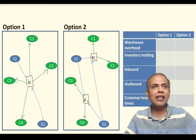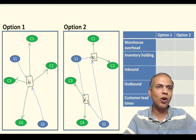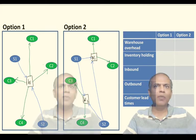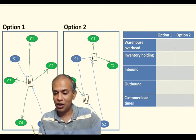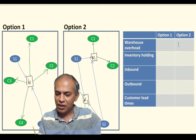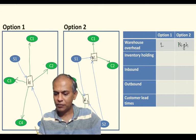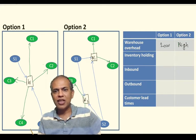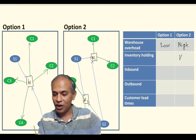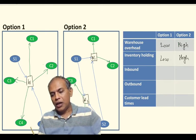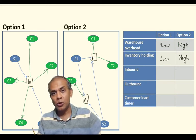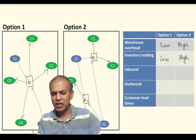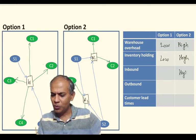Both these situations completely change our cost structures of the distribution. In option one, I had one warehouse, and in option two I have two warehouses. So obviously my warehousing cost in option two is substantially higher than in option one. And since I'm holding the inventory at two locations now, my inventory holding cost should also be higher. Most probably the inbound cost would also go up, because the suppliers earlier were making just one delivery to the warehouse, but in option two they're making two separate deliveries. So we can safely assume that in option two, the supplier's dispatch costs are higher.